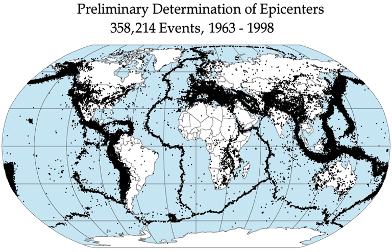The 10 largest recorded earthquakes have all been megathrust earthquakes; however, of these 10, only the 2004 Indian Ocean earthquake is simultaneously one of the deadliest earthquakes in history. Earthquakes that caused the greatest loss of life, while powerful, were deadly because of their proximity to either heavily populated areas or the ocean, where earthquakes often create tsunamis that can devastate communities thousands of kilometers away. Regions most at risk for great loss of life include those where earthquakes are relatively rare but powerful, and poor regions with lax, unenforced, or non-existent seismic building codes.